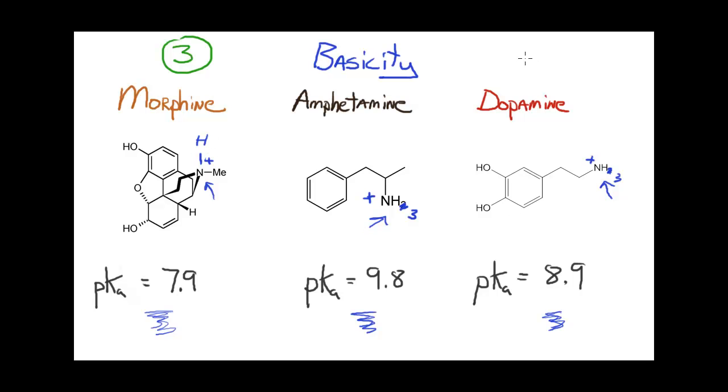Therefore, dopamine is the second weakest base, or the second strongest base, since we only have three. And amphetamine, because the protonated version of amphetamine is the weakest acid, it is the strongest base when in its neutral form.